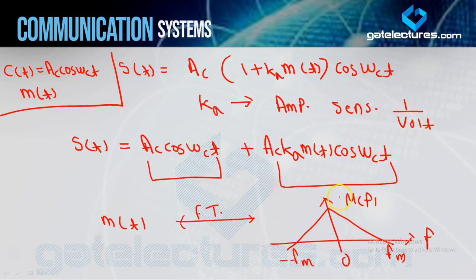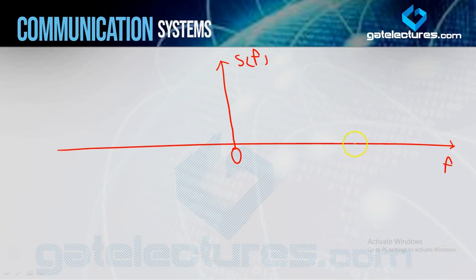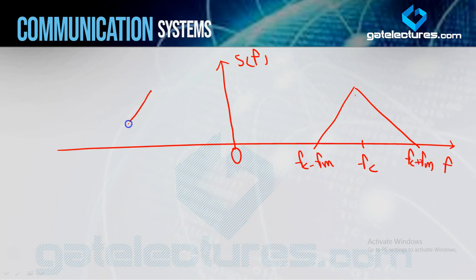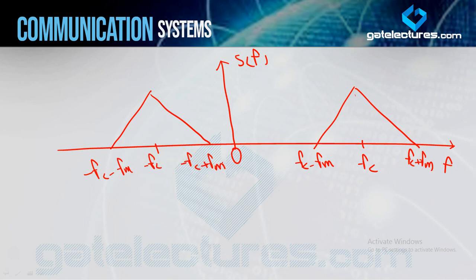So M(F) will be right-shifted and left-shifted. For right shift, we add FC to every frequency. The diagram will show FC, FC − FM, and FC + FM. For left shift, the diagram shows −FC − FM, −FC, and −FC + FM. As I mentioned in the last video, the negative side is just a replica of the positive side.